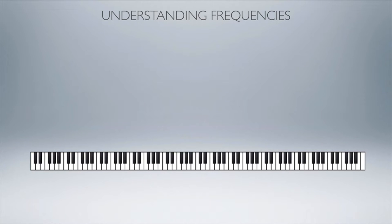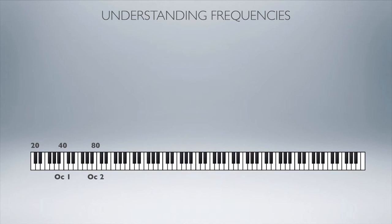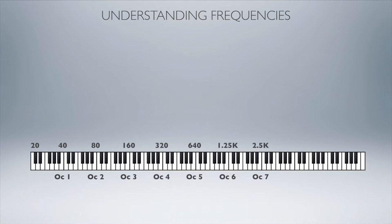Every frequency we hear — if we start at 20 Hz — doubles every octave we go up. So after the first octave it goes from 20 Hz to 40 Hz. Up another octave: 80 Hz. Then 160, 320, 640. We round the next one to 1.25k, then 2.5k, 5k, 10k, and all the way up to 20k.